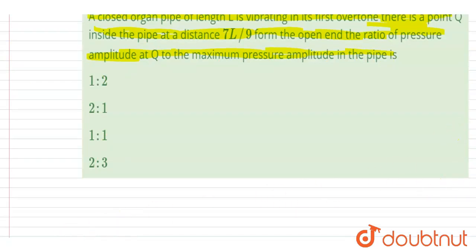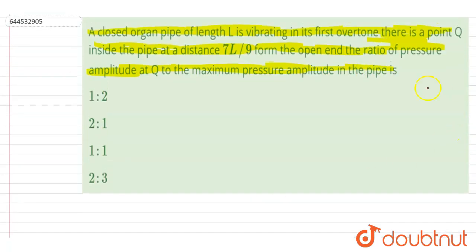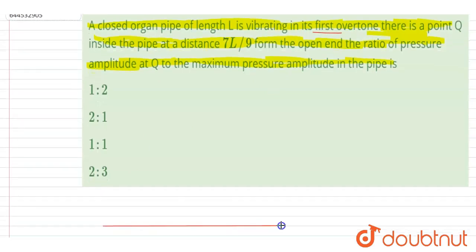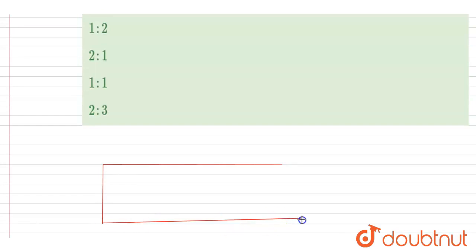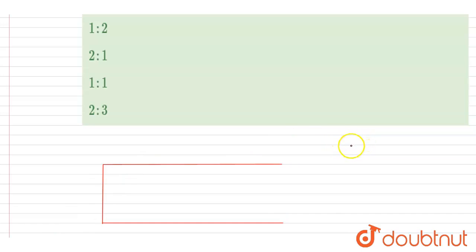So if I draw a closed organ pipe — it is already given in the question that it is vibrating in its first overtone. The curve will look like this.